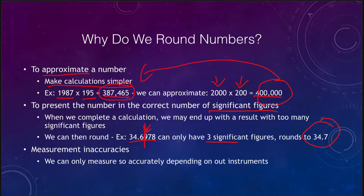We can also look at things like measurement inaccuracies. We can only measure so accurately, so we may round our numbers based on that. For example, we may only be able to measure something to the nearest millimeter with a ruler — it would be very difficult to measure accurately to a tenth of a millimeter. So therefore we round the numbers as well.